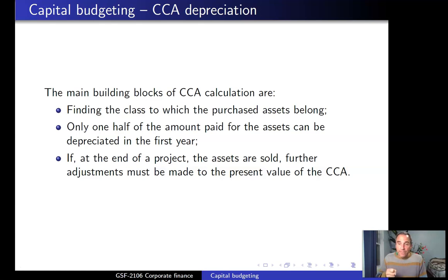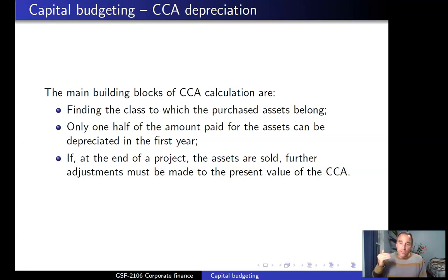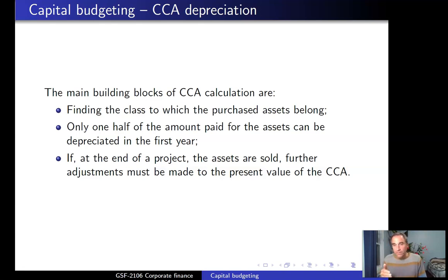Second, in the first year when you buy an asset, you can only depreciate one half of the purchasing price. This is because these assets could have been purchased at the beginning or at the end of the year, so the revenue agency only allows firms to deduct one half of the value of the assets in the year they are purchased for depreciation purposes.